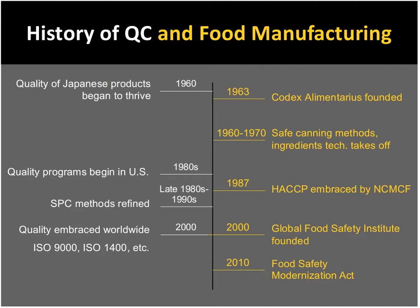The second half of the timeline shows what has happened in food manufacturing since the 1950s. In 1963, Codex Alimentarius was formed — a commission created by the Food and Agriculture Organization of the United Nations, joined by the World Health Organization in 1962. Its main goals were to protect the health of consumers and ensure fair practices in international food trade. It is recognized by the World Trade Organization as the international reference point for resolving disputes concerning food safety and consumer protection.